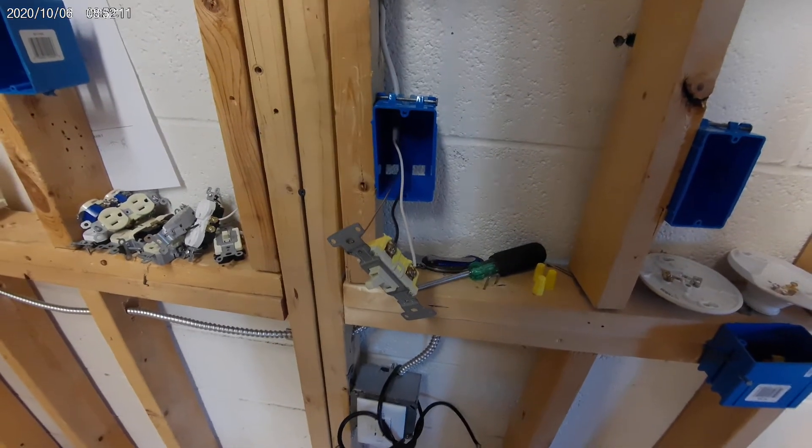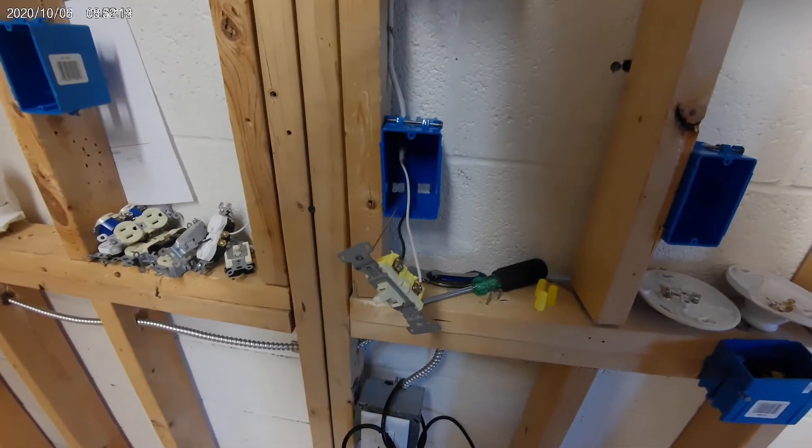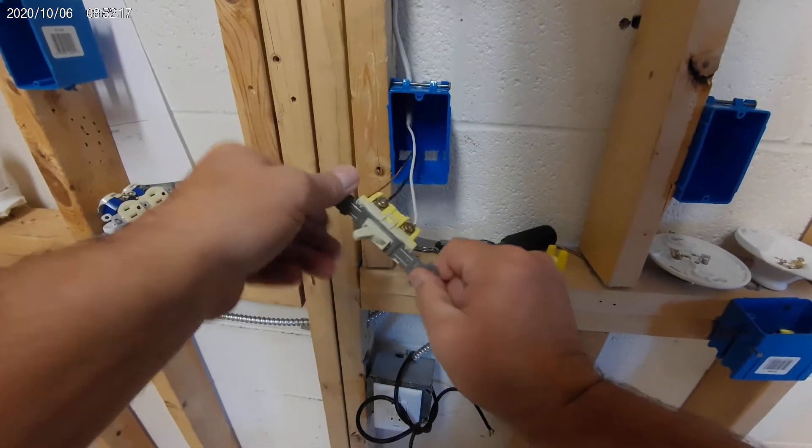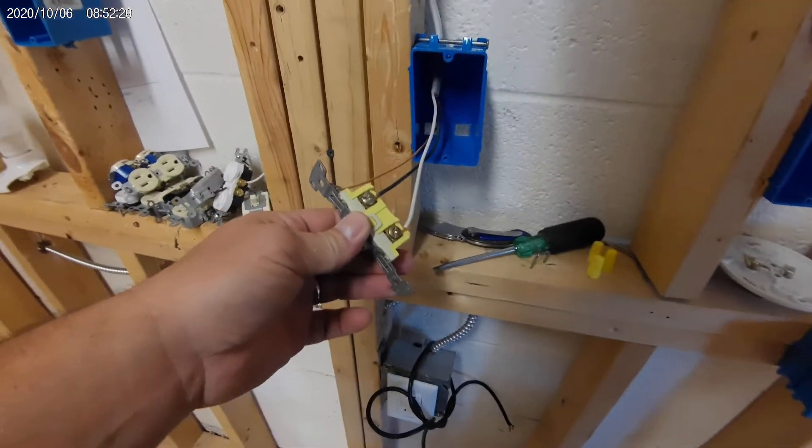Today we will be going over switch loops. You will notice this in a lot of older homes when you get to a switch. You are going to come across the single pole switch that has a white wire and a black wire on it.